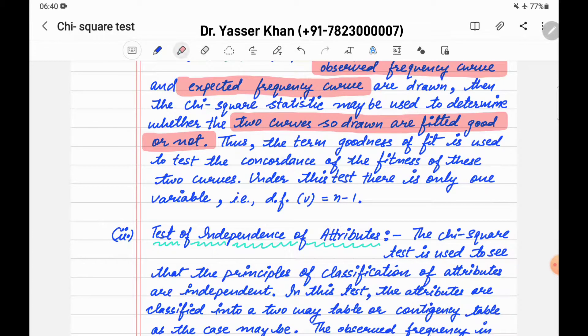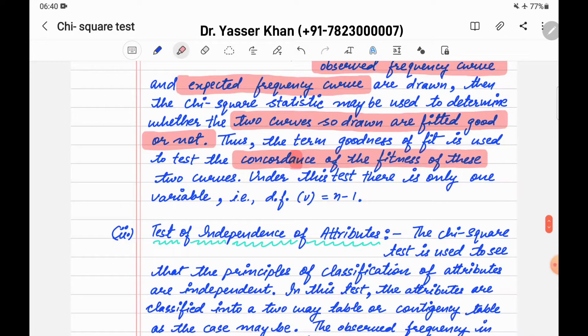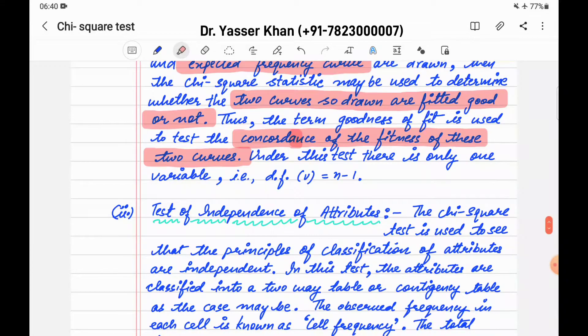The term goodness of fit is used to test the concordance of the fitness of these two curves. Concord means to get one with one, so the two curves E (expected frequency curve) and O (observed frequency curve) are getting together and how good they fit.